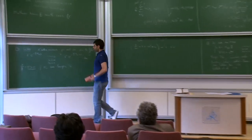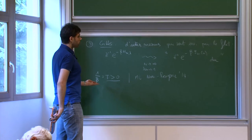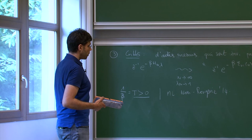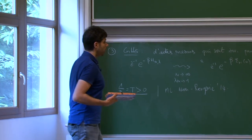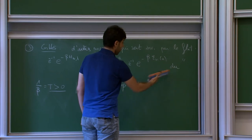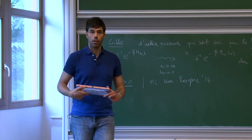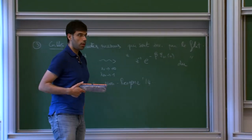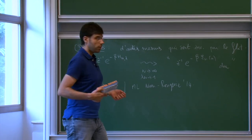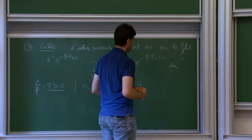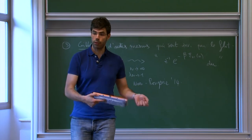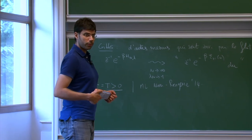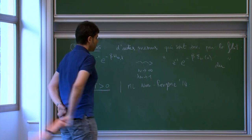These Gibbs measures are the natural question once one has looked at the zero-temperature minimization problem. These measures are well known since at least the 1970s and are heavily used now by several people in the dispersive community — in particular for constructing solutions to nonlinear Schrödinger equations with very rough, non-smooth initial conditions. But the derivation from quantum mechanics — I know nothing of this type. And that is what I will tell you about, again in collaboration with Nam and Rougerie.